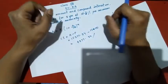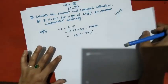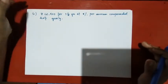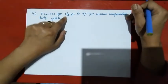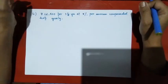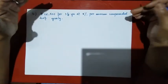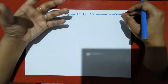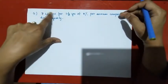This is a very important question. The question is: 62,500 for 1.5 years at 8% per annum, compounded half yearly. Since it is compounded half yearly, the compounding period is half yearly — so we adjust the rate and time accordingly.